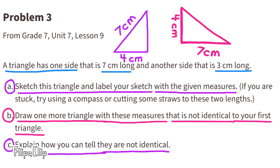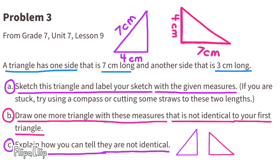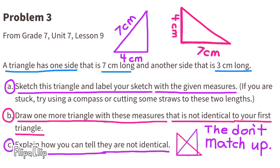C: Explain how you can tell they are not identical. The triangle on the left has a hypotenuse that's 7 centimeters long, and the triangle on the right does not have a hypotenuse that's 7 centimeters long. Plus, if you were to place these triangles on top of each other, they don't match up.